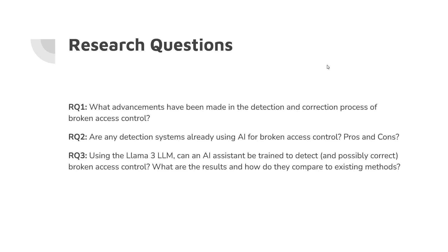These are our research questions. Research question one: what advancements have been made in the detection and correction process of broken access control? Research question two: are there any detection systems already using artificial intelligence for BAC, and what are the pros and cons of those? Research question three: using the LLAMA 3 LLM, can an AI assistant be trained to detect and possibly correct BAC, and how do the results compare to existing methods? We have answered research question one and partially research question two, which will be covered later.